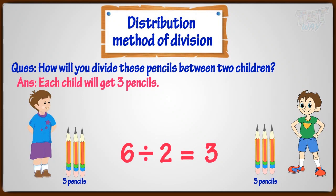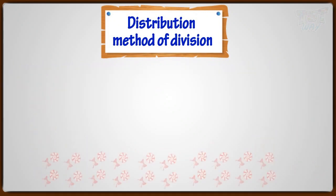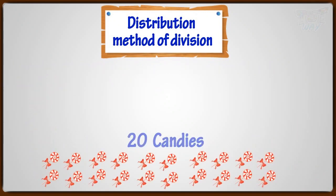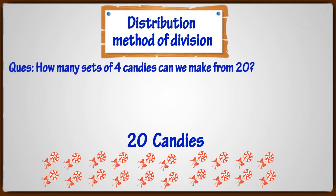Now let's learn another way. There are 20 candies. How many sets of four candies can we make from 20?